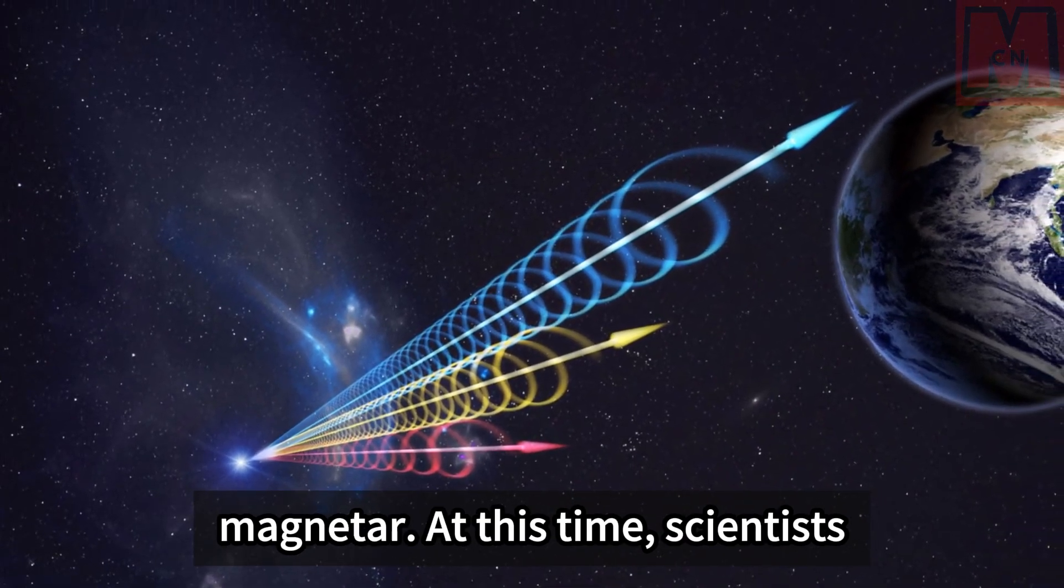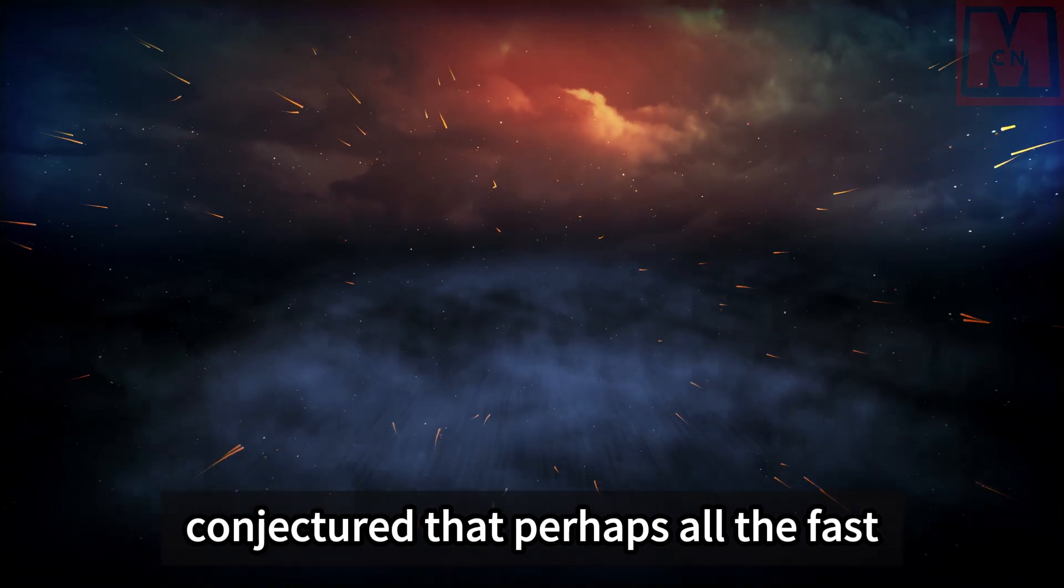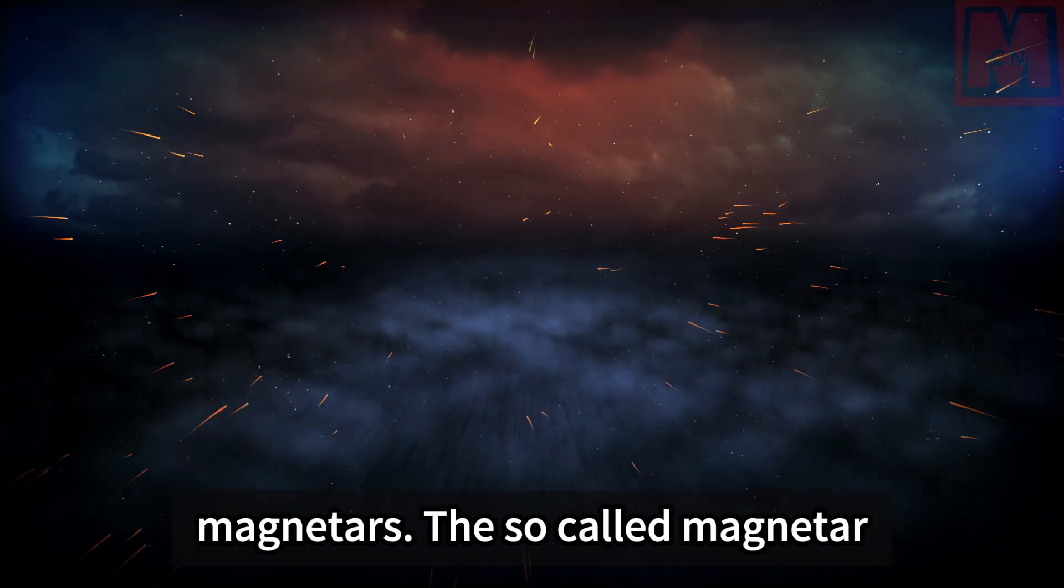At this time, scientists conjectured that perhaps all the fast radio bursts we accept come from magnetars. The so-called magnetar refers to a neutron star with a super-strong magnetic field.